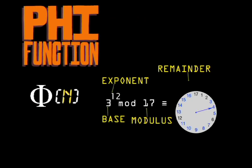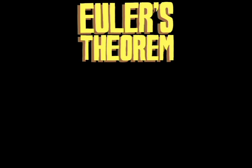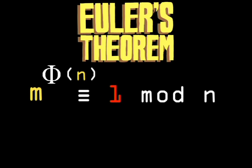Step 3, how to connect the phi function to modular exponentiation. For this, he turned to Euler's theorem, which is a relationship between the phi function and modular exponentiation as follows.